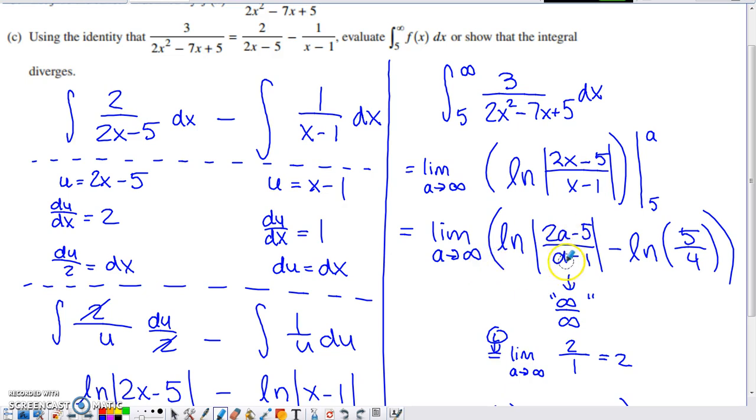Well, when I put infinity there and infinity there, I do get infinity over infinity. Well, within that logarithm, the indeterminate form infinity over infinity isn't that big of an issue to address with L'Hopital's rule. Derivative of the top with respect to A is 2. Derivative of the bottom with respect to A is 1. So, as we approach infinity, this expression within the logarithm is approaching positive 2.